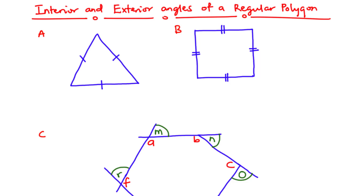A regular polygon is a closed plane figure which has equal interior angles and equal sides. Typical examples are an equilateral triangle and a square.